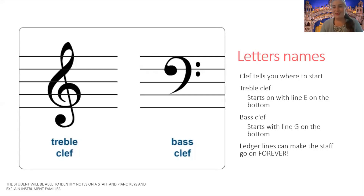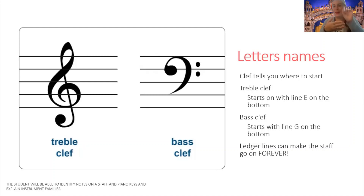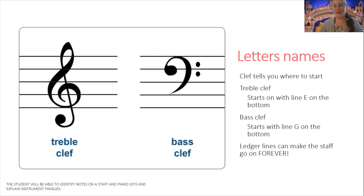Ledger lines are this wonderful thing where music can go on and on forever. It's like putting a little spacer, and you can put little ledger lines all the way up and down to infinity and beyond, adding imaginary lines and spaces to your staff.